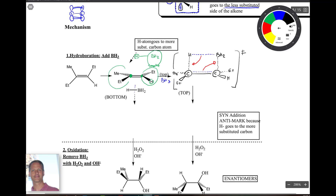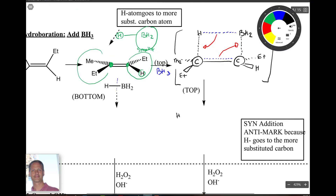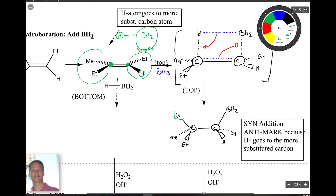That transition state leads to: an H atom connected to one carbon, connected to another carbon connected to BH2 — on the same side. The wedge and dash on the carbons stay; we just copy them down. If we come from the bottom attack, the H's are on top, and we get H connected to one carbon, to another carbon, and BH2 — that's the bottom attack product.